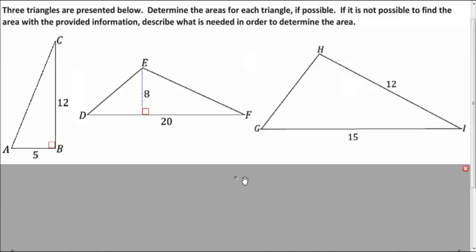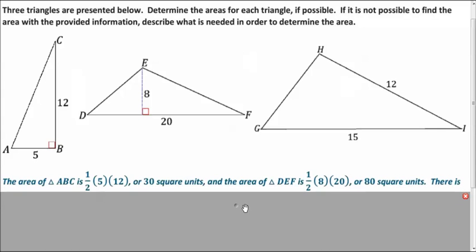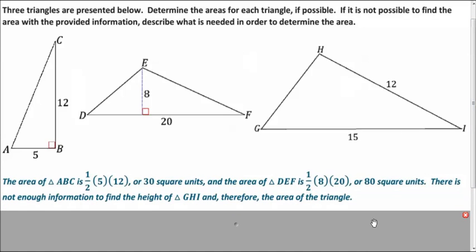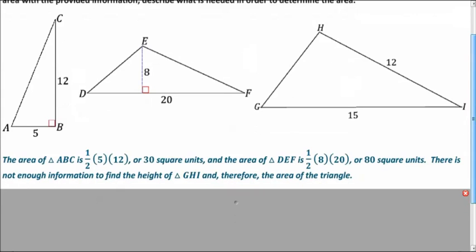So in the first two, they give us a base and a height. So we can use our formula, one-half base times height, and we get 30 and 80 square units. Now the last one, they don't give us a height. So it looks like we don't have enough information to figure out its area. We just have two bases.